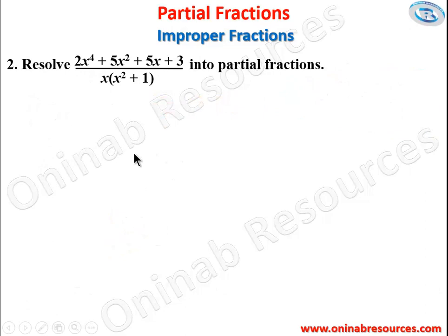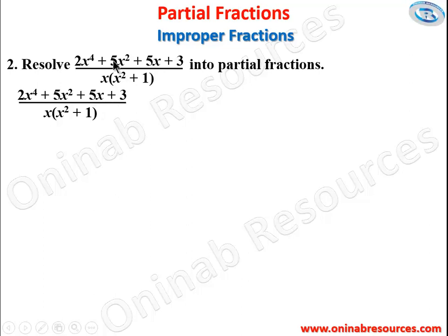For Problem 2, resolve 2x⁴ + 5x² + 5x + 3 over x(x²+1) into partial fractions. Here x is a linear factor and x²+1 is a non-linear factor. When the denominator is expanded the highest power is 3, while the numerator has highest power 4, confirming this is an improper fraction. We divide numerator by denominator using long algebraic division.